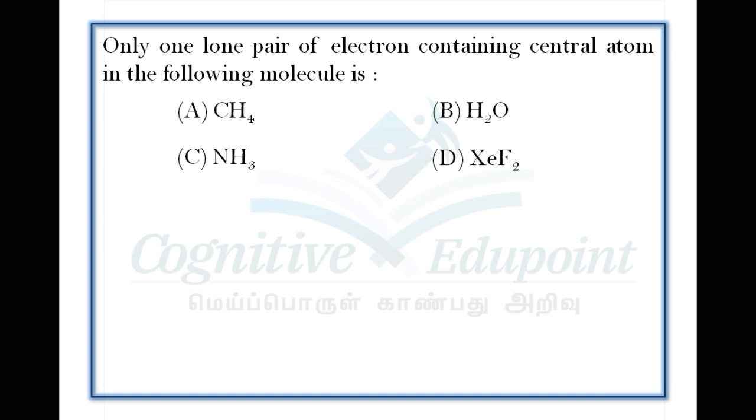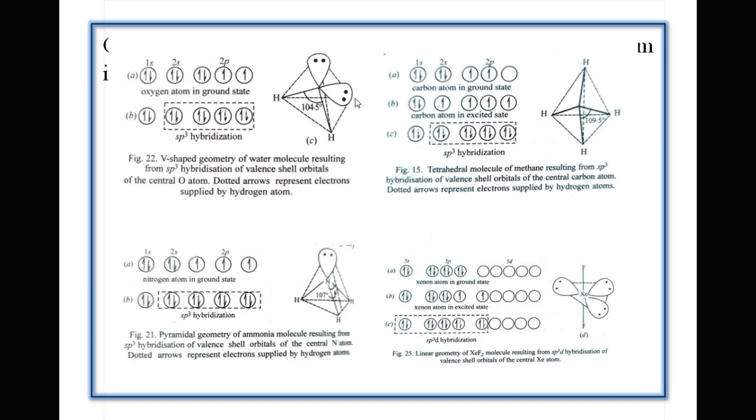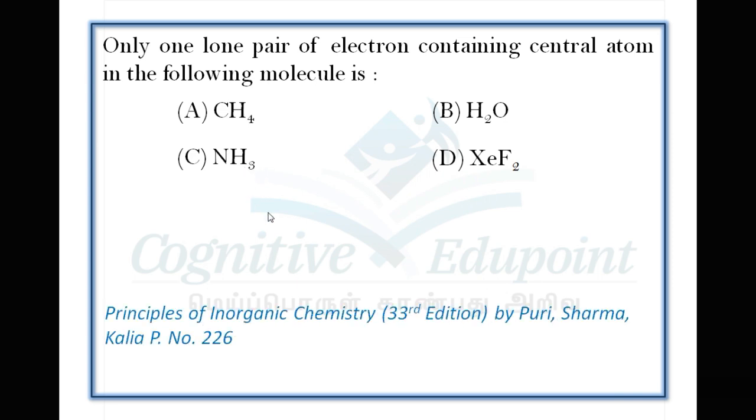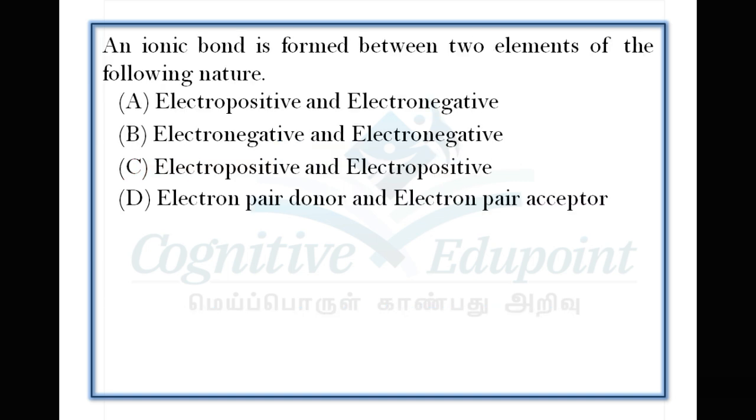Next question, simple again: Only one lone pair of electron containing central atom in the following molecule is? Four different molecules: methane, water, ammonia, and xenon difluoride. Methane has no lone pair, sp3 hybridization. Water has two lone pairs. Ammonia contains only one lone pair on the central nitrogen atom.